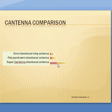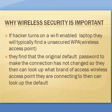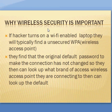Why wireless security is important: if hackers turn on a Wi-Fi enabled laptop, they will typically find an unsecured WPA wireless access point. They find that the original default password to make the connection has not been changed. They can look up what version of wireless access point they are connecting to, and then look up the default password.